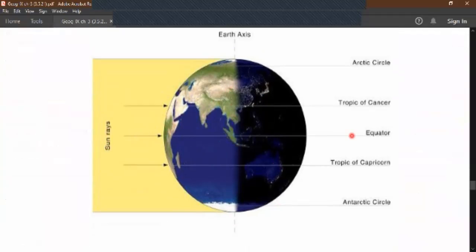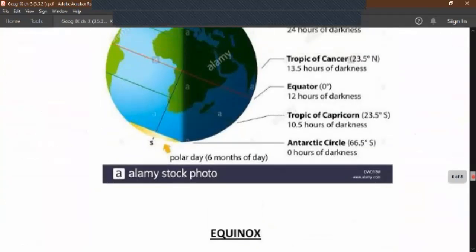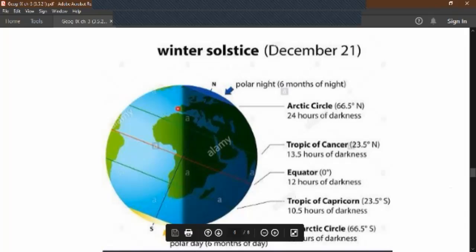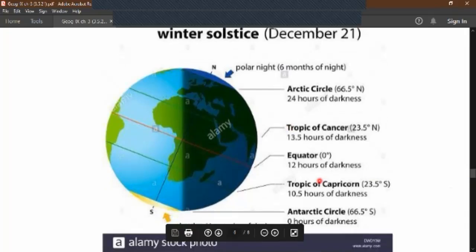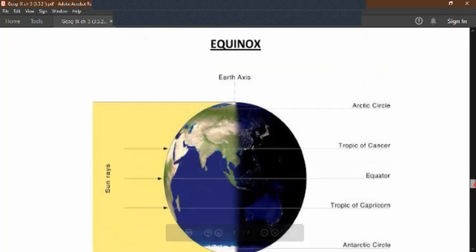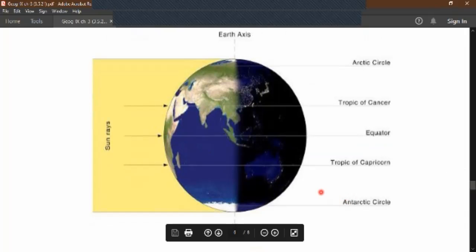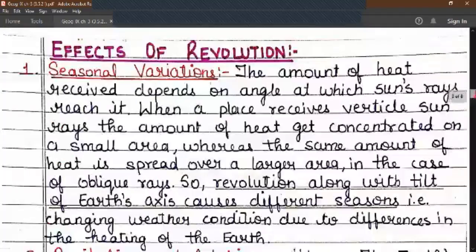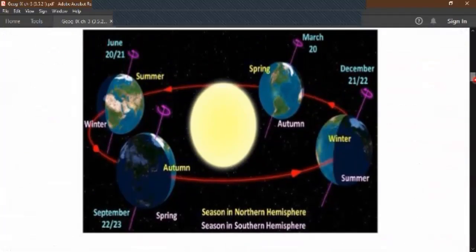Now the position on 22nd of December. The southern hemisphere has summers and northern hemisphere has winters. It will be more clear with this particular diagram, as you can notice here in this picture. Again, on 21st of March, it is spring in the northern hemisphere and autumn in the southern hemisphere.